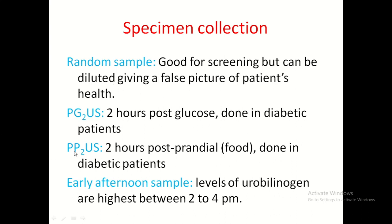There are special types of samples, like PG2-US — 2 hours post-glucose — done especially for glucose tolerance testing in diabetic patients. Then PP2-US: 2 hours post-prandial urine sugar, also done for diabetic patients. Sometimes early afternoon samples are required, especially for measurement of urobilinogen, because levels of urobilinogen are highest between 2–4 PM.